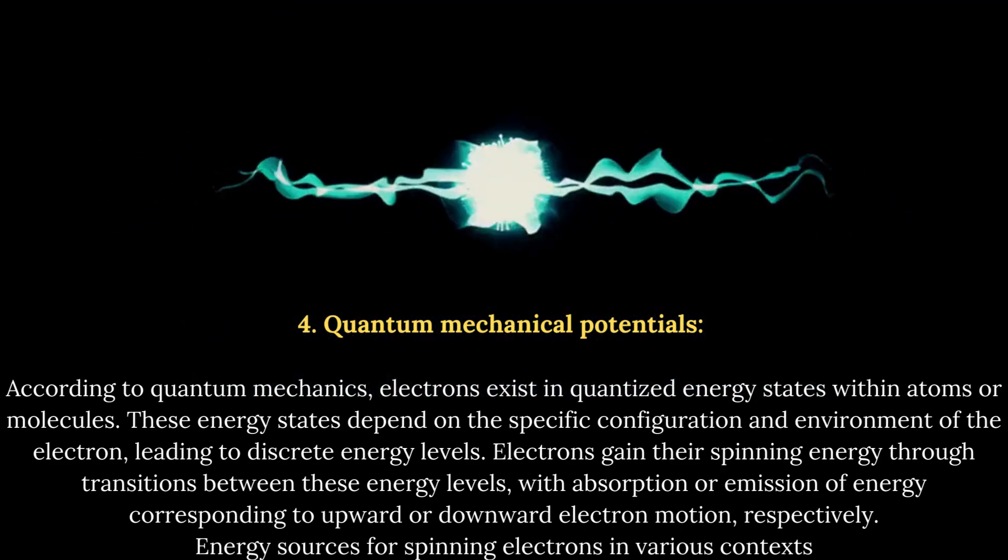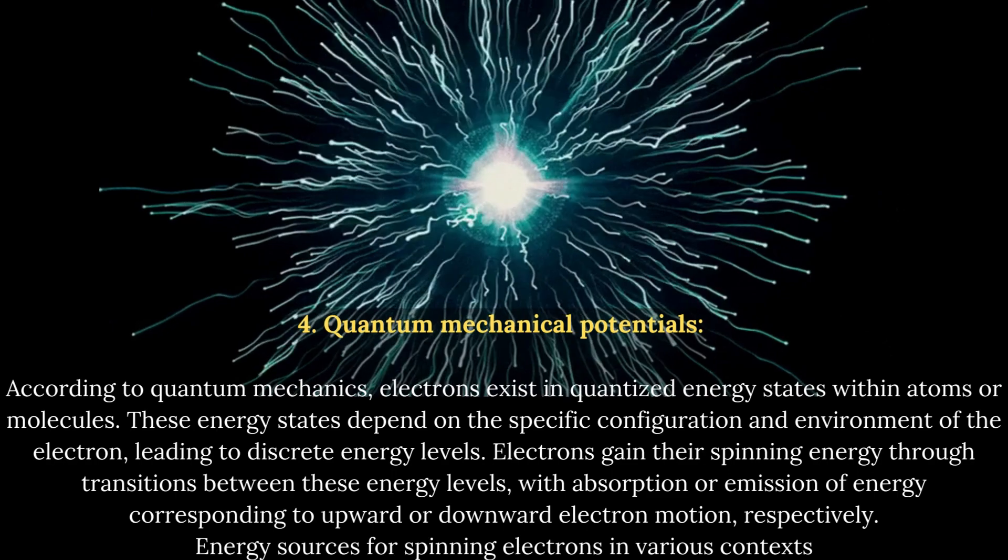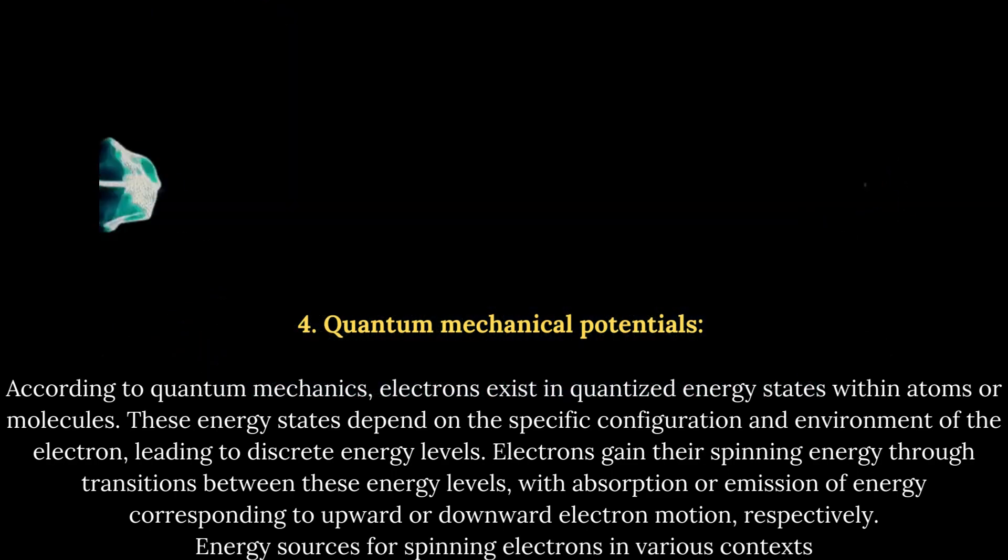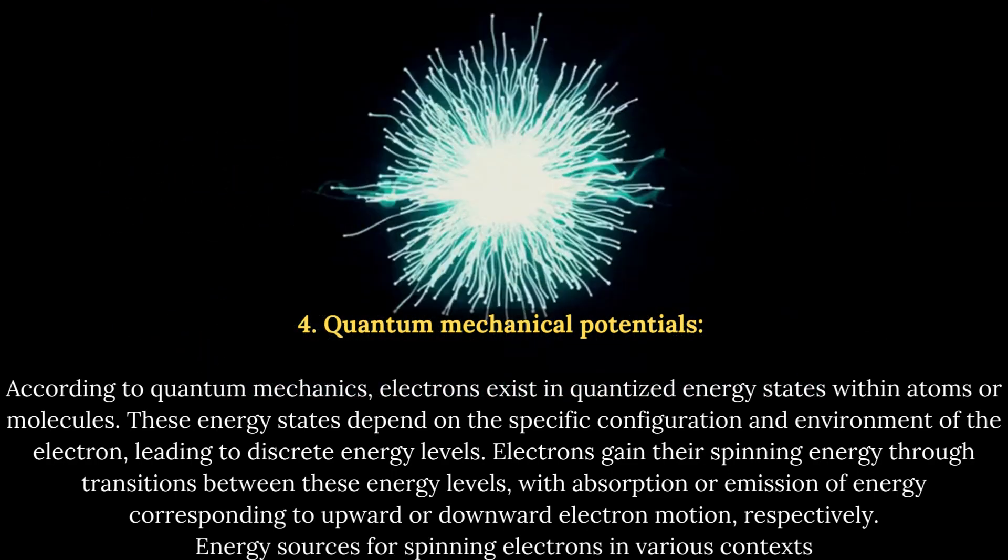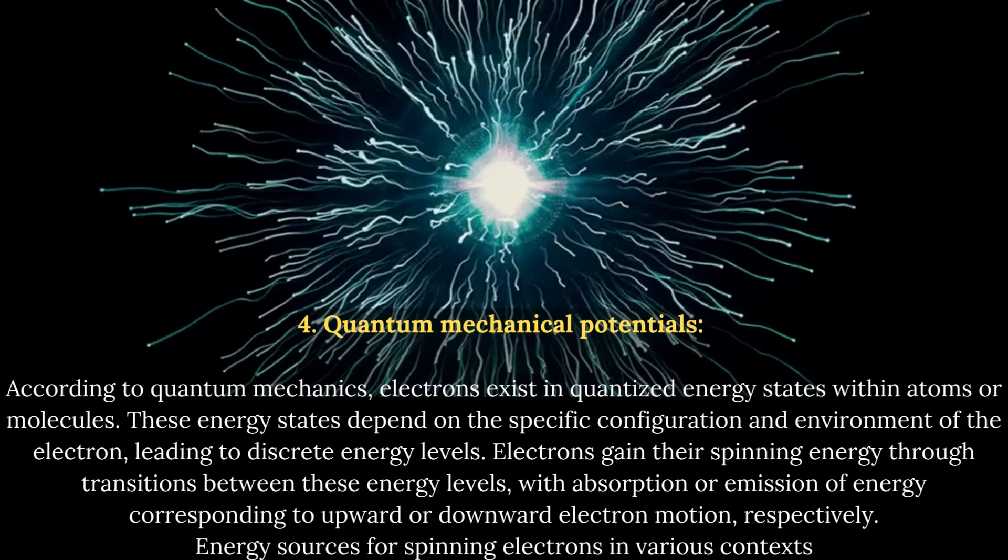Electrons gain their spinning energy through transitions between these energy levels, with absorption or emission of energy corresponding to upward or downward electron motion, respectively.